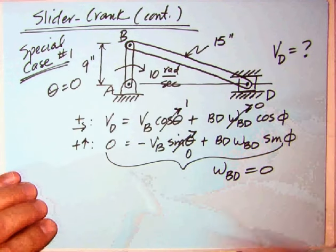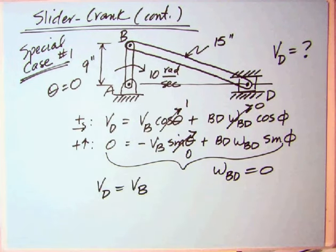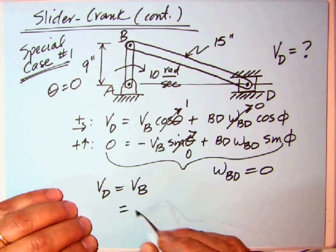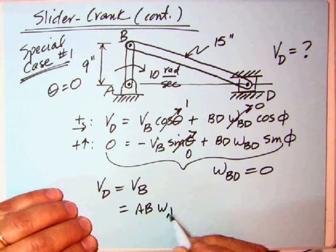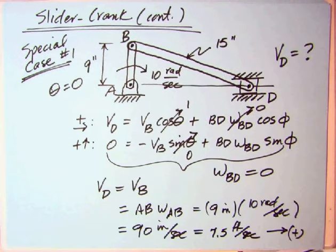If omega BD is zero, then this term goes away. So the velocity of D is just equal to the velocity of B, which is just equal to AB omega AB. I put in the numbers, nine inches times ten radians per second gives us 90 inches per second, divided by 12 to get 7.5 feet per second. We got a positive number, so it is positive to the right. Notice we didn't have to find the angle phi. Don't let them have that one.